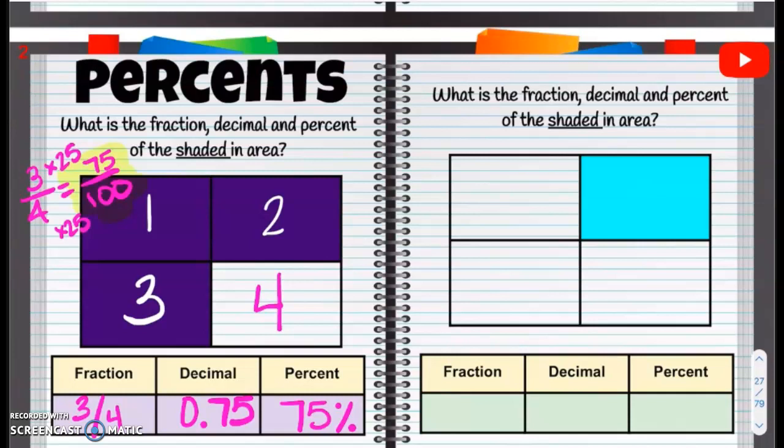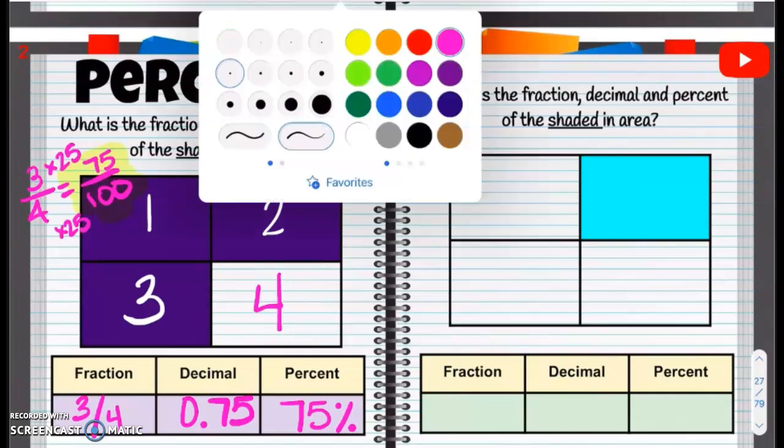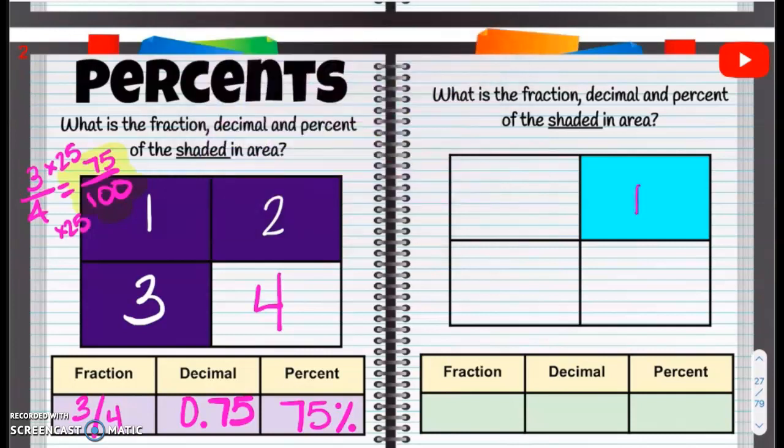Same thing over here. Let's take a look. We have one shaded area. So one over—we have one, two, three, four. One out of four.